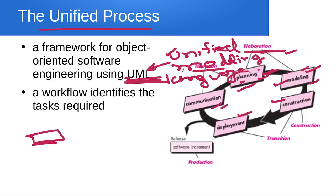After inception and elaboration are complete, we come to the Construction phase. In this phase, we actually write the code and try to understand whether it is correct. We construct the software, make it operational, and test it. We develop the final version of the software according to the requirements given.